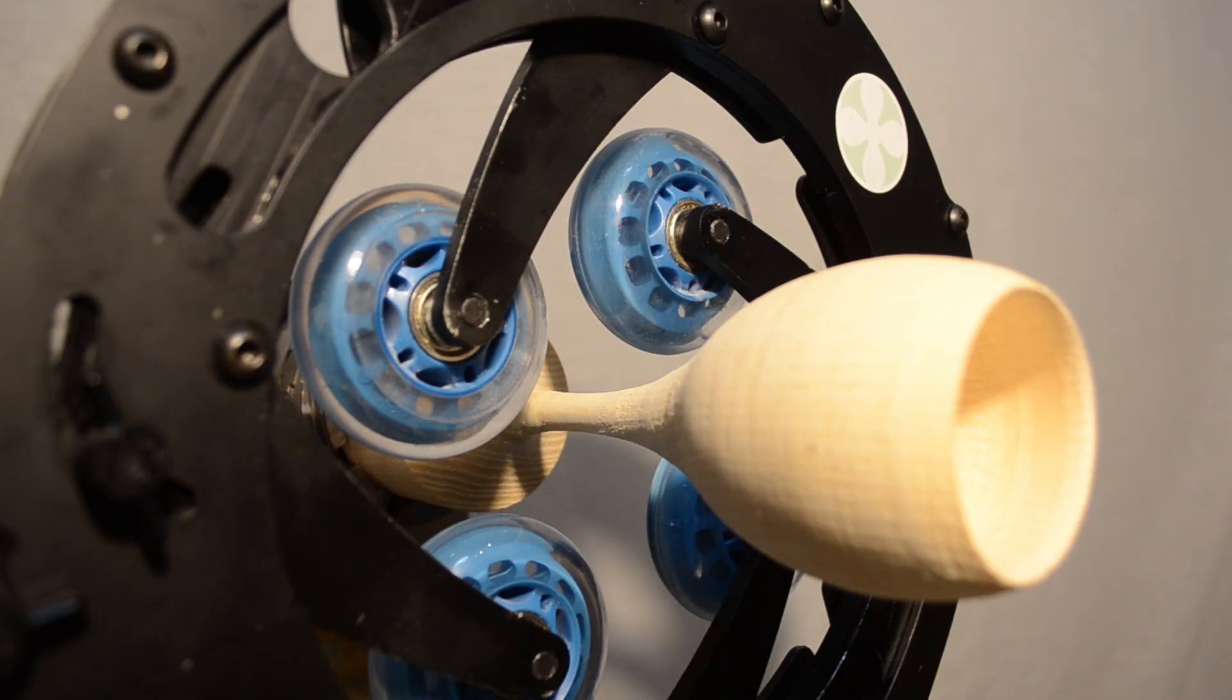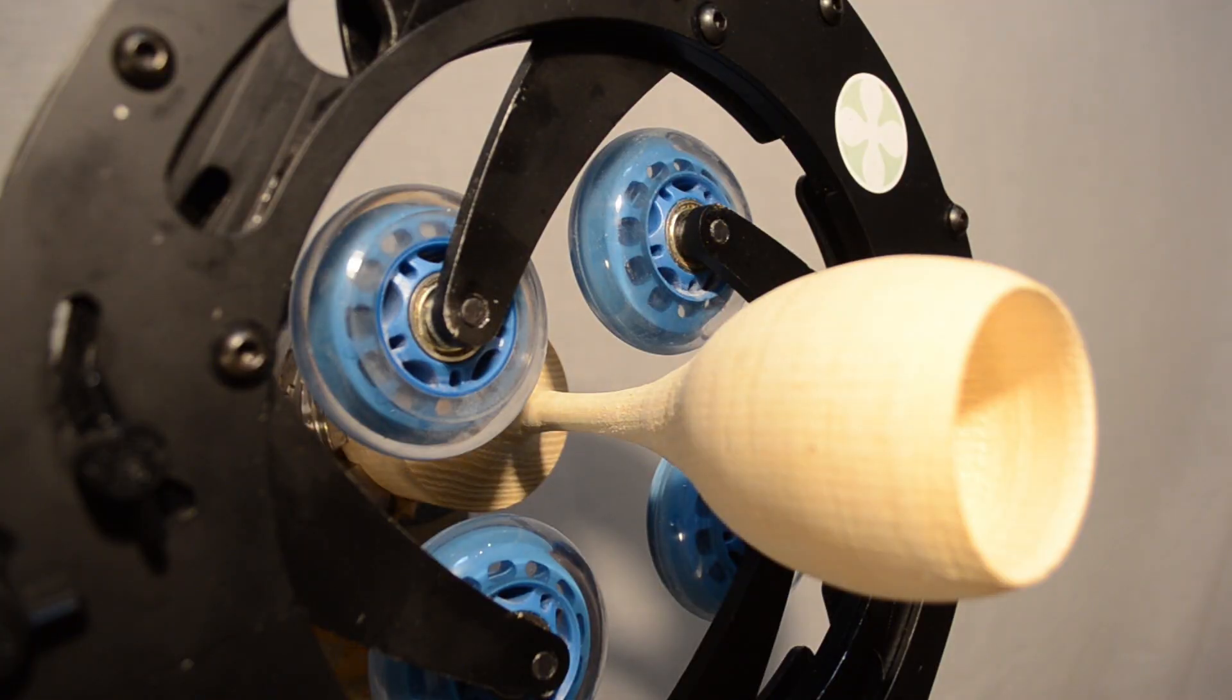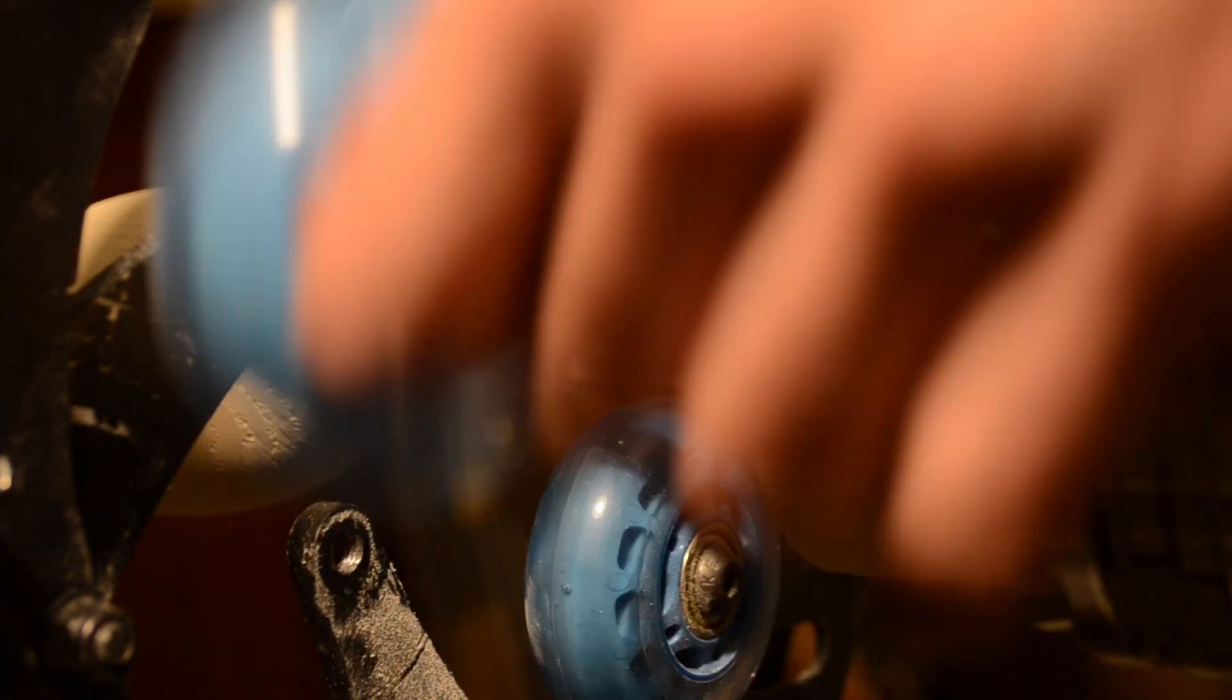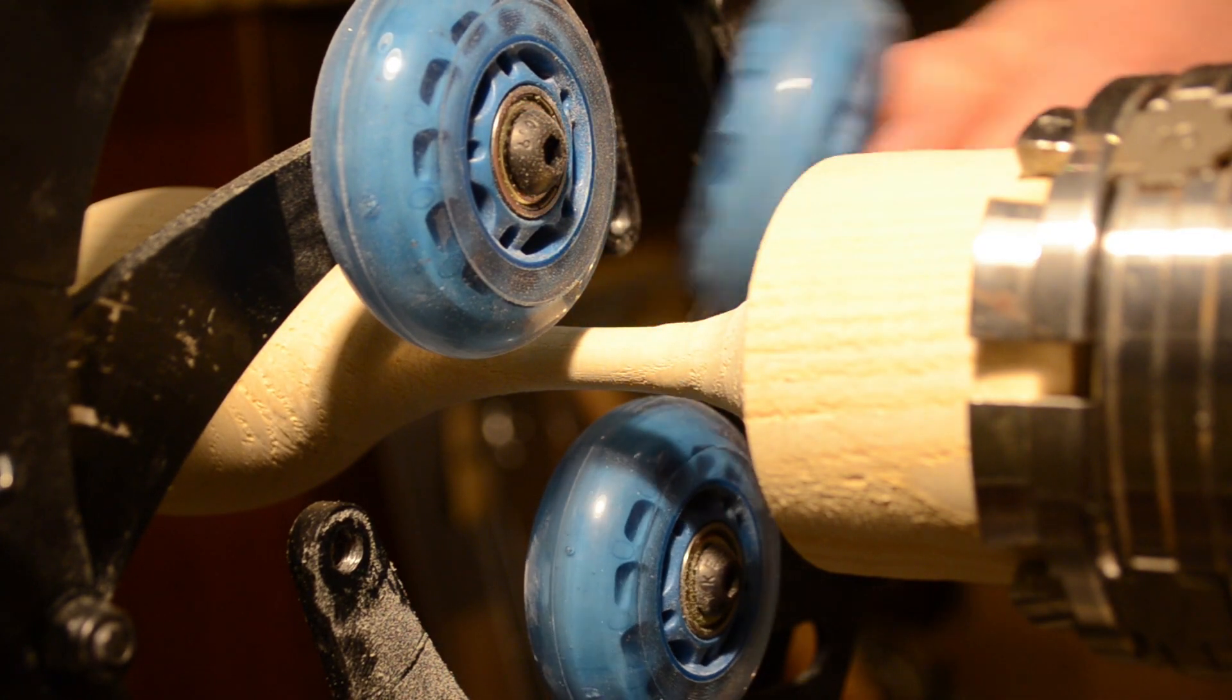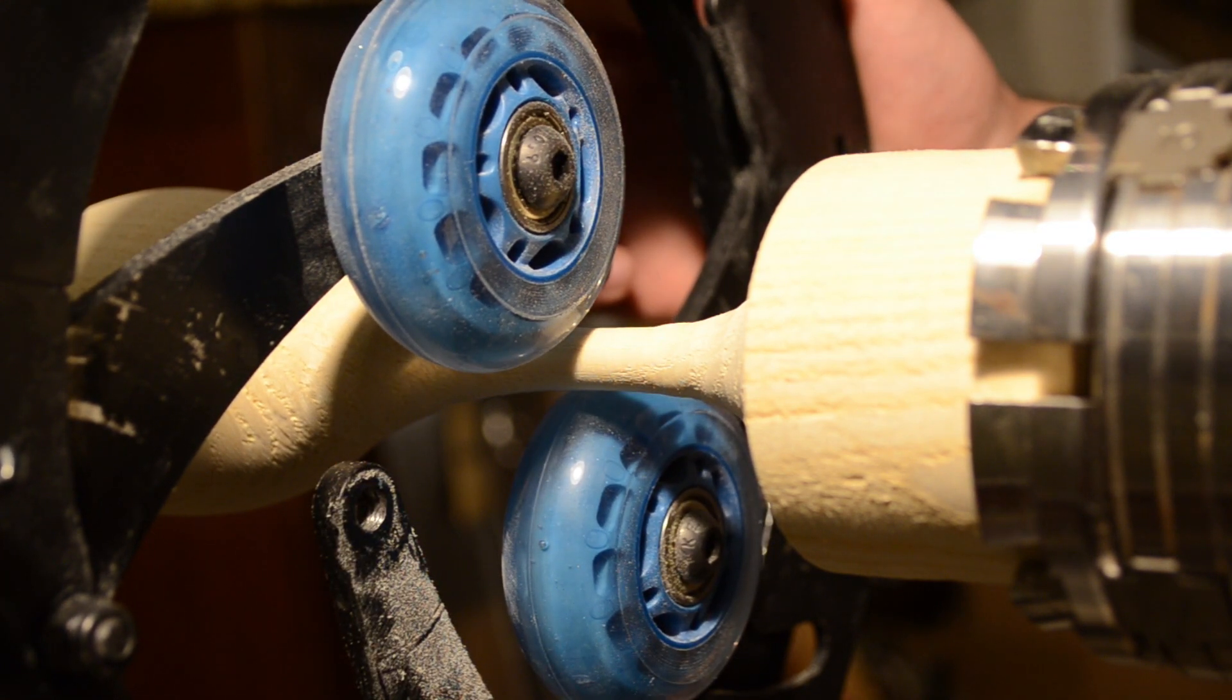Now I want to support the stem of the goblet, and this is another place where the Iris Steady Rest is truly innovative. With three wheels, it's impossible to bring the wheels perfectly together, meaning there's a small diameter that you cannot turn. However, with the Iris Steady Rest's unique four-wheel design, this is not a problem. You can see that when I remove one set of wheels, the two remaining wheels are able to come perfectly together on the stem of the goblet.